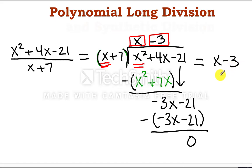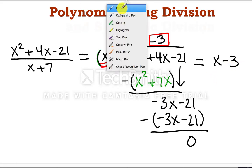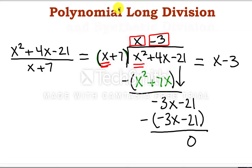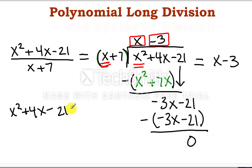Since we didn't end up with a remainder, we can go ahead and write this numerator in factored form. So the numerator x squared plus 4x minus 21 can be rewritten as the factors x plus 7 times x minus 3.